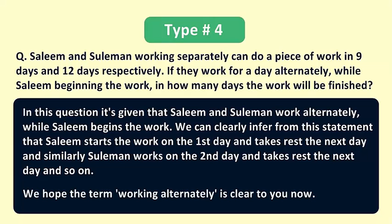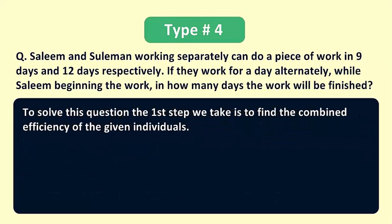So we hope the term working alternately is clear to you now. Moving forward to solve this question, the first step we take here is to find the combined efficiency of the given individuals.